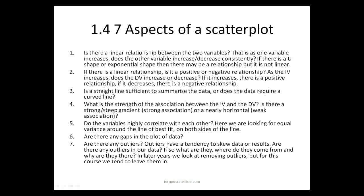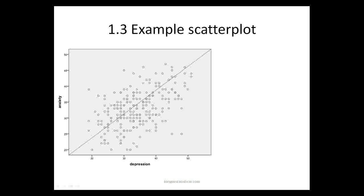There are seven aspects of a scatterplot that you need to go through. The first one is, is there a linear relationship? The second one, if so, is it positive or negative? The third one is, well, if it's not linear, is there a better way to summarize the data? If it is, is a straight line the best? The fourth question is, what is the strength of the association? That is, is the gradient very strong or is it weak? Is there a high correlation? Are there any gaps in the data and where are the outliers?